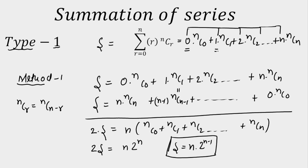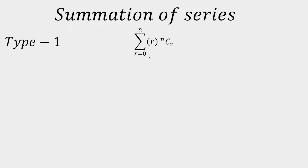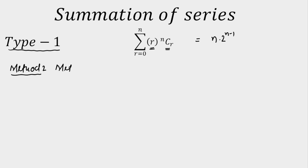What if the coefficients of binomial coefficients are not in AP? Then we use Method 2, which is valid for any Type 1 series — the method of differentiation. Starting with the identity (1+x)^n = summation of nCr · x^r, if we differentiate both sides with respect to x, on the right we get summation of r · nCr · x^(r-1), and on the left we get n·(1+x)^(n-1).